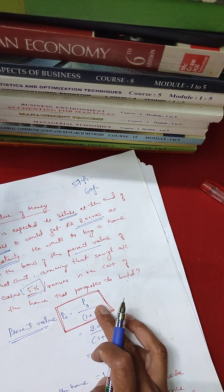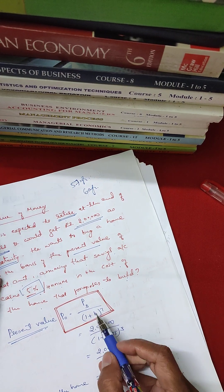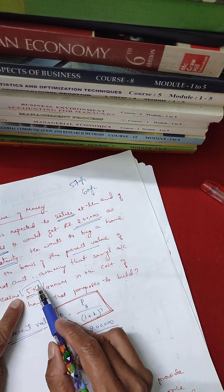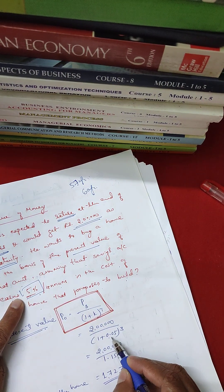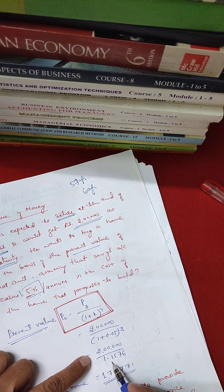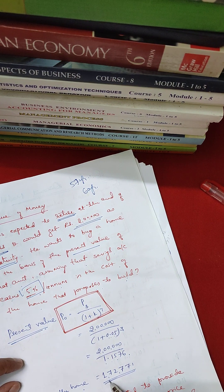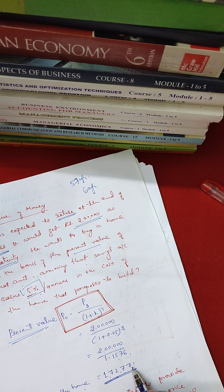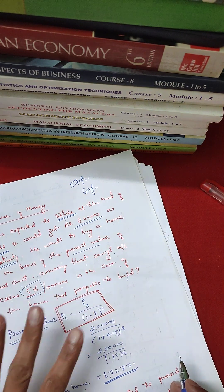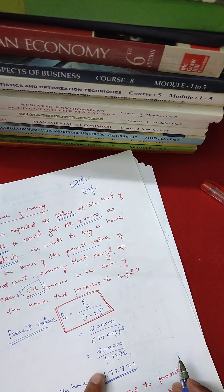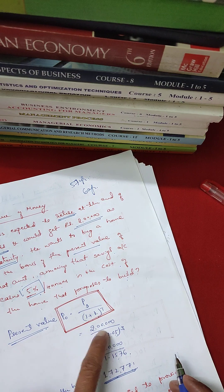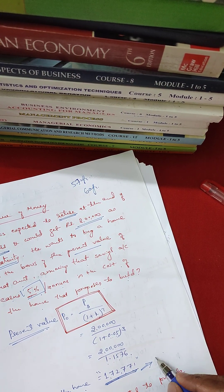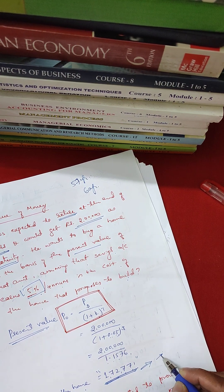The formula is: P0 is equal to P3 divided by (1 + k) raised to t. Here P3 is the amount at the end of three years — two lakh rupees. k equals 5%, so 1.05 raised to 3 equals 1.1576. Two lakh divided by 1.1576 gives approximately one lakh seventy-two thousand seven hundred and seventy-one rupees. This is the present value cost of the home.